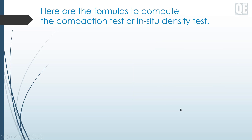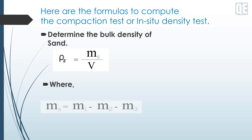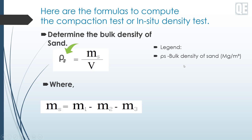Here are the formulas to compute the compaction test or in-situ density test. First, determine the bulk density of sand: ρs = ms / V, where ms = m1 − m2 − m3. Here, ρs means bulk density of sand, and ms is the mass of sand to fill the container.